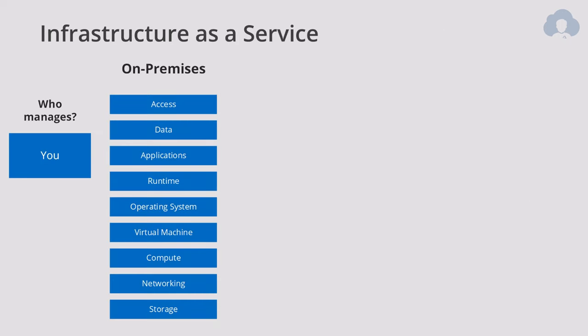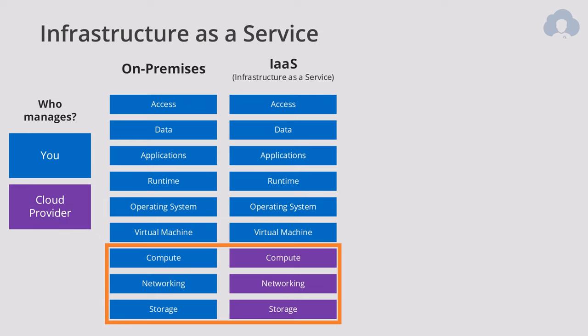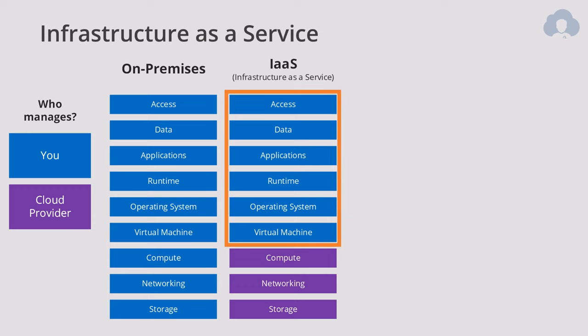One thing to remember is that when you're moving from on-premises, you had to manage everything. When moving to the cloud, there are already a few things that you will not have to manage, because the cloud provider will manage them for you. This includes storage — the actual hard drives underneath your virtual machines — networking cards, and compute, the actual physical machines. What you'll still have to manage is the virtual machine itself, the operating system, and the runtime. In the case of a web application, this could be IIS on Windows or Nginx on Linux.